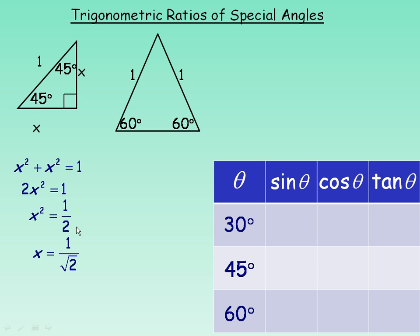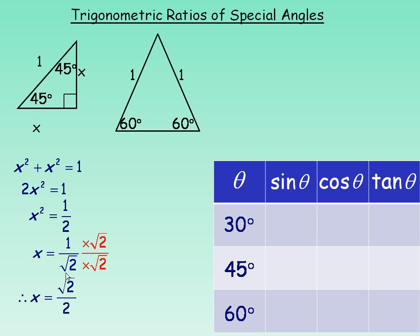2 is not a perfect square. We can leave x in this form, but it's normally written differently. We're going to do a procedure called rationalizing the denominator, which means making the denominator a rational number — right now it's irrational. We multiply both the numerator and the denominator by root 2, because that's what's in the denominator. Root 2 times root 2 equals 2, so the denominator becomes 2, and 1 times root 2 gives root 2 in the numerator. So x equals root 2 over 2, and I'll label both sides of the triangle with root 2 over 2.